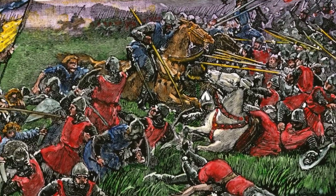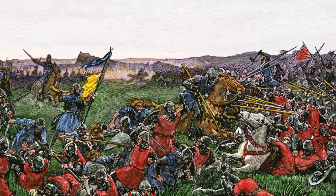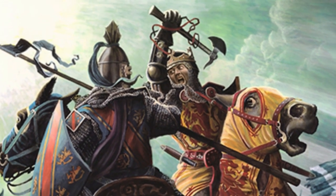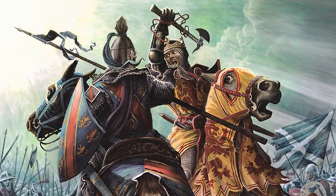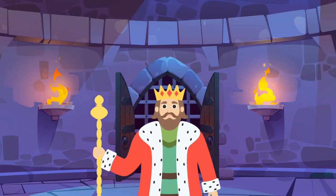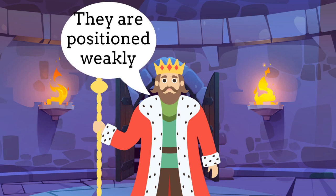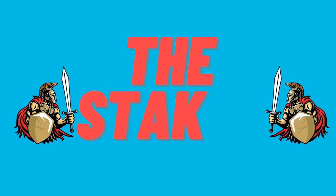The heavy cavalry of the English vanguard attempt to outflank the Scots, but are repulsed. The repulse of their knights and defeat of a famed English knight in a duel against Bruce demoralize the English on the first day of combat. Bruce decides to attack the next day when he learns Edward is bivouacking his army on soggy ground, hemmed in between the Bannockburn and Pellstream rivers, both at high tide.